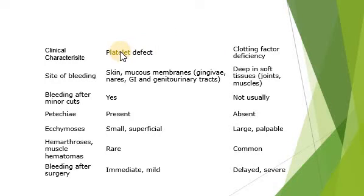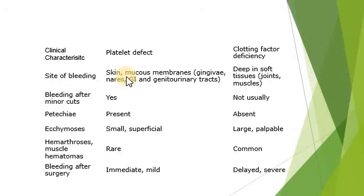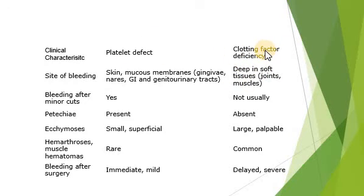To differentiate whether bleeding is due to a platelet defect or clotting factor deficiency, clinical characteristics provide insight. If the site of bleeding is the skin, mucous membrane, GI tract, or genitourinary tract, the most probable cause is platelet deficiency. However, if there is bleeding deep in soft tissue or joints, that is mainly due to clotting factor deficiency. In platelet deficiency there will be bleeding after a minor cut, while in clotting factor deficiency this does not usually occur as normal platelet functioning is present.